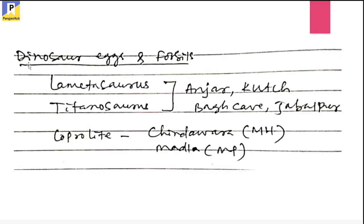The Lameta Bed is rich in dinosaur fossils — dinosaur bones, dinosaur eggs, and bivalves are found in the succession. Important dinosaurs include Lametasaurus and Titanosaurus. These dinosaur-associated fossils are found in Anjar and Kutch region of Gujarat, in Bagh Cave in Jabalpur in Madhya Pradesh. Coprolites — fossil excreta of dinosaurs — are found in the Chhindwara region of Maharashtra and Mandla region of Madhya Pradesh. These names are very important from an exam point of view.